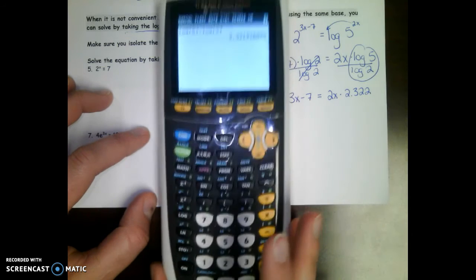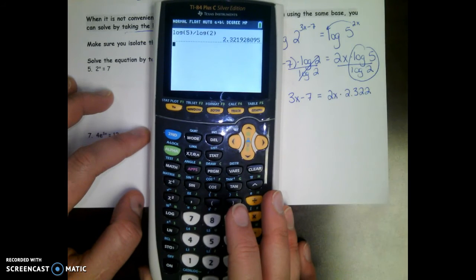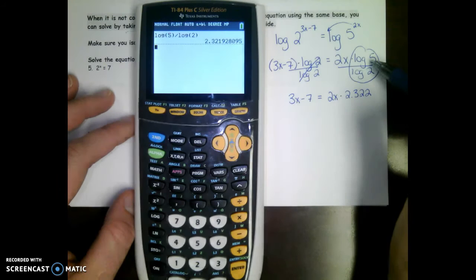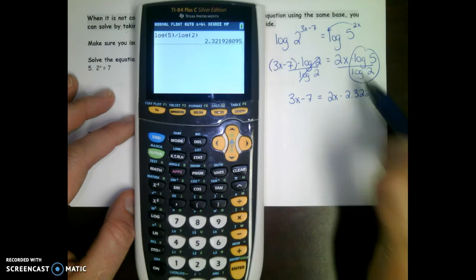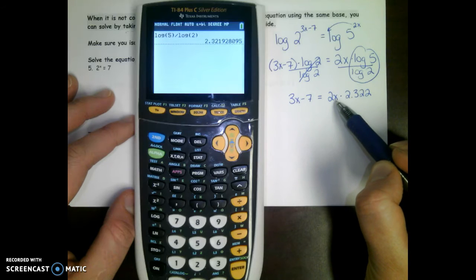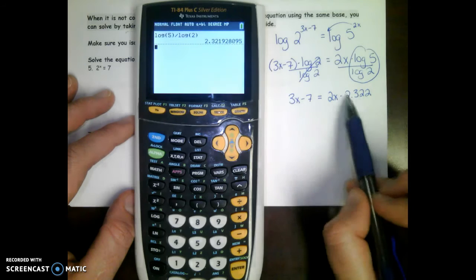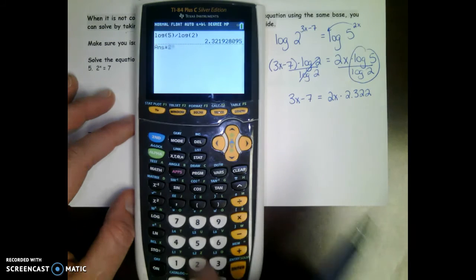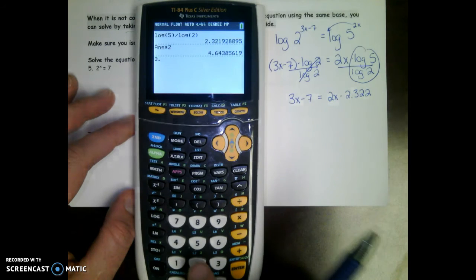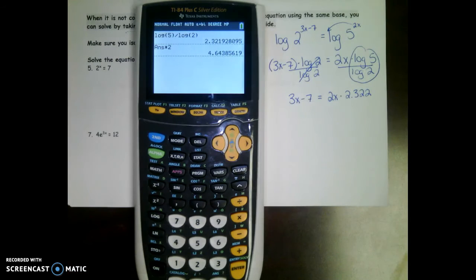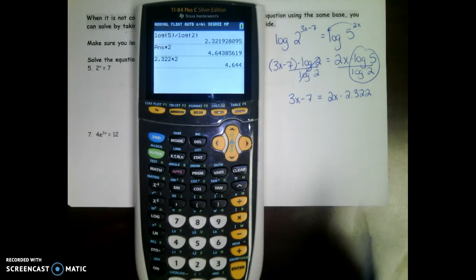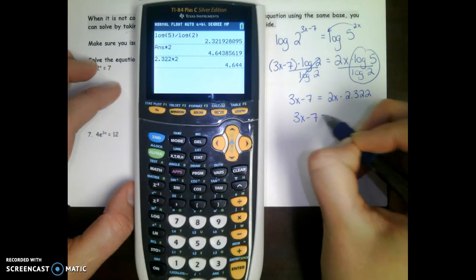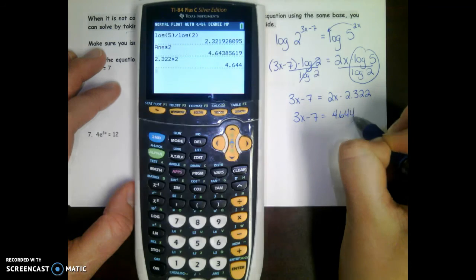The left side will just be 3x minus 7. On the right side you can do log of five divided by log of two. So log button five divided by log button two. We did log of five divided by log of two and we got this decimal, 2.322. We still have the 2x there. This is two times x times 2.322, so I can do 2.322 times 2, 4.644x.